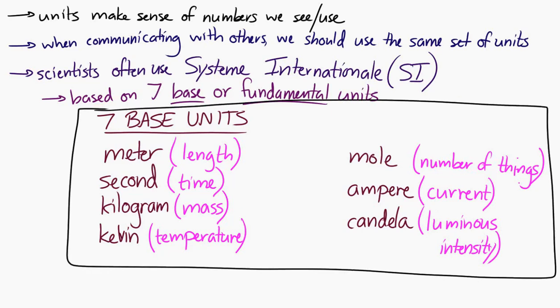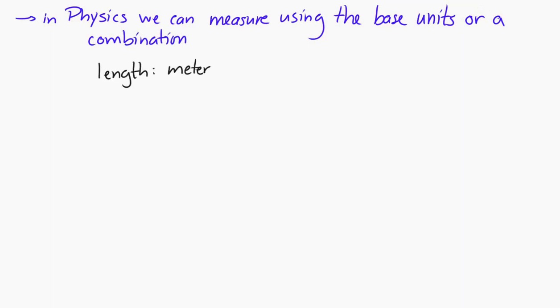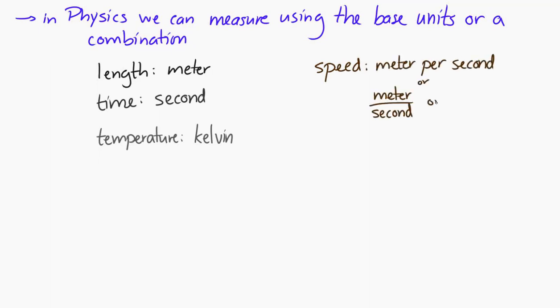So, in physics, we can either measure something in terms of one of these units, or in terms of a combination of these units. For example, a length, you can measure in terms of meters. A duration of time, you can measure in terms of seconds. A temperature, you can measure in terms of kelvin. Now, perhaps you need to measure a speed. And it turns out that speed has units of meters per second, or meters divided by seconds. And another way to write that would be meters times s to the minus one.